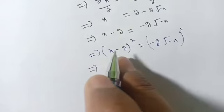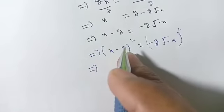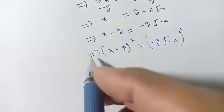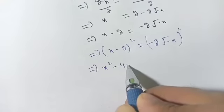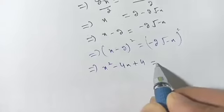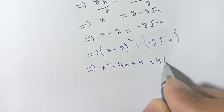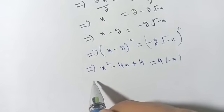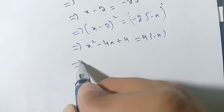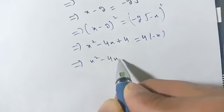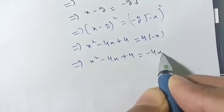This becomes (a minus b) whole square, which gives a squared minus 2ab plus b squared. It becomes x squared minus 4x plus 4 is equal to 4 of minus of x, which gives x squared minus 4x plus 4 is equal to minus 4x.